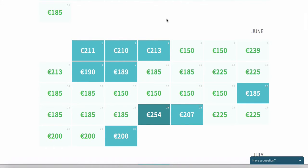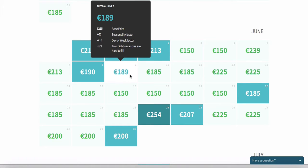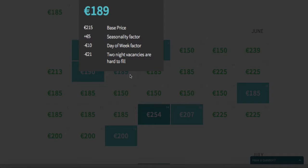The unbooked days are indicated with blue backgrounds, and the cool thing is if I hover over one of the prices, Beyond Pricing will tell me why they're charging the price that they're charging.